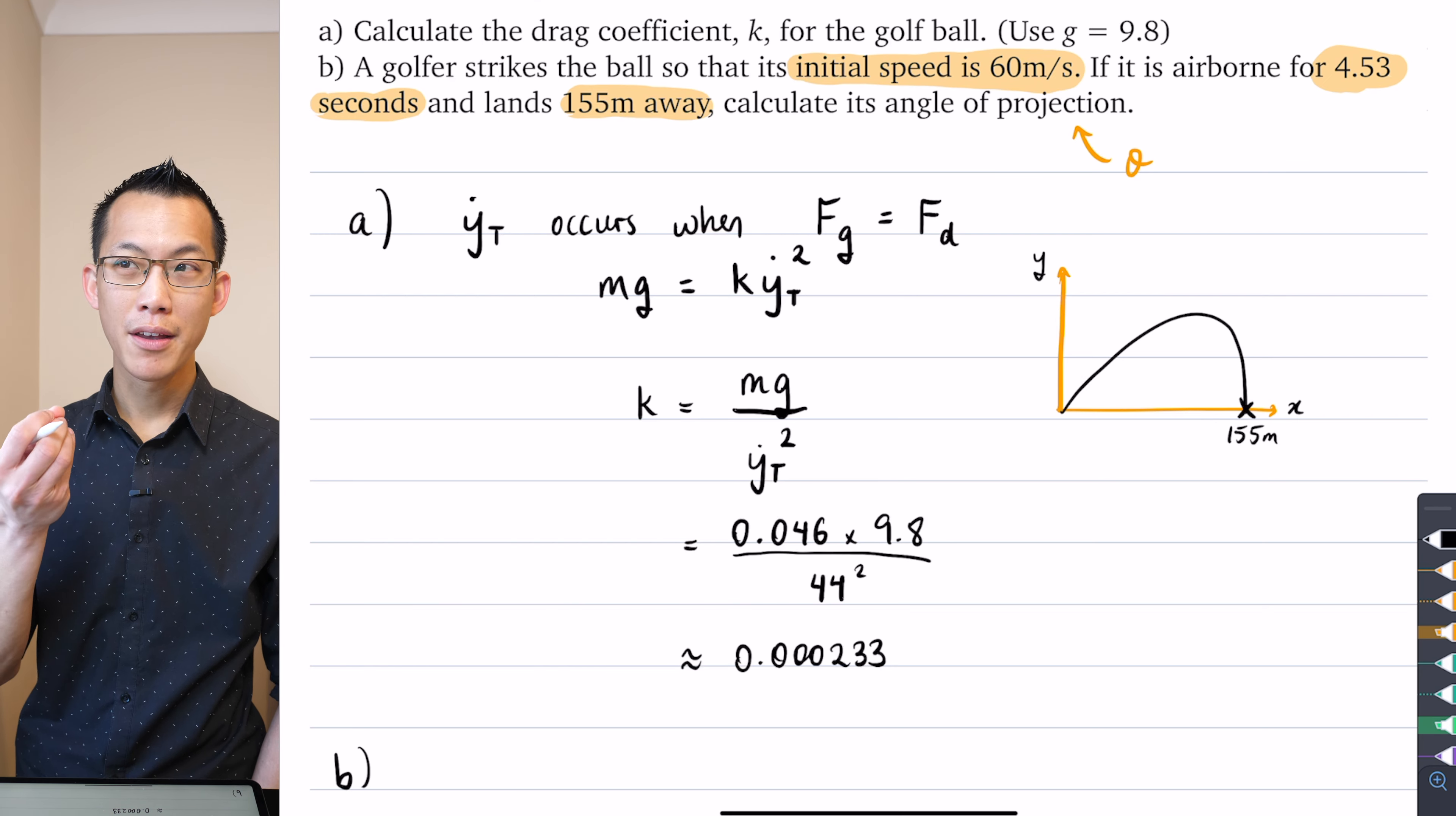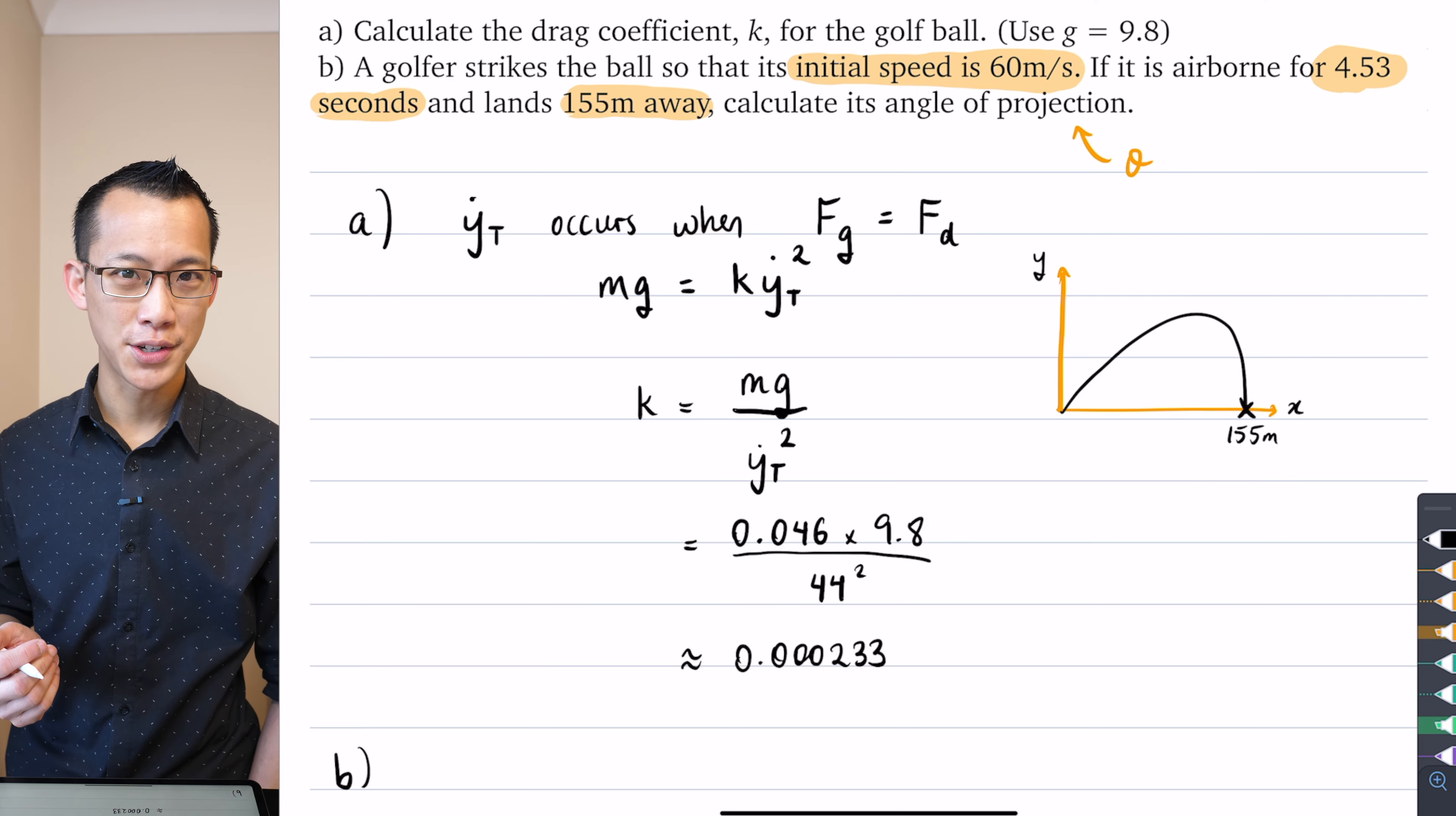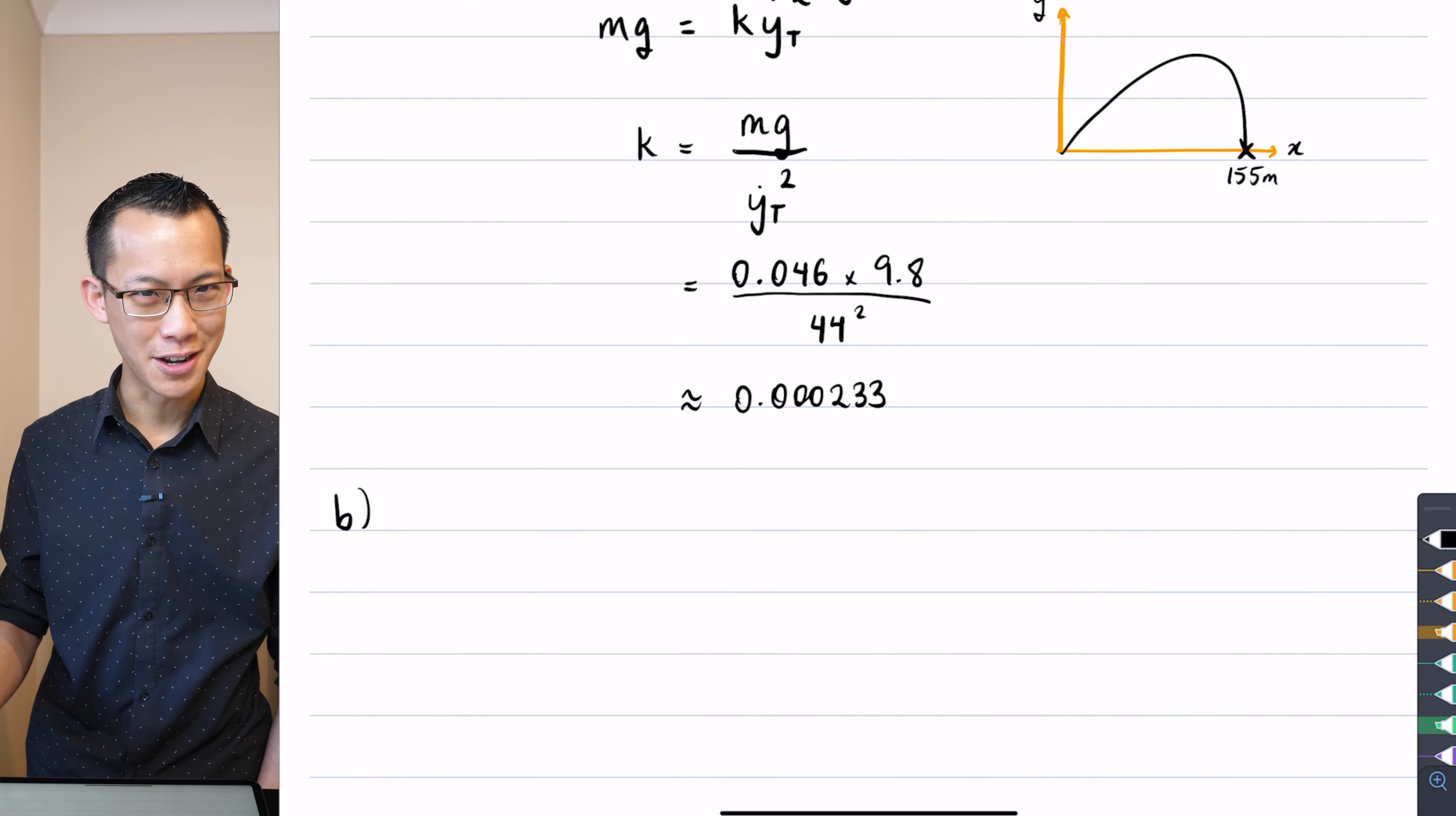We've already found out from part A what the terminal velocity is, but you don't have to find out how high does it go, at what time does it reach its maximum height - those kinds of things, those are vertical displacement questions. We've been given horizontal displacement information, so following on from part A which dealt with Y dot, we're now going to transition to think about X dot and X double dot.